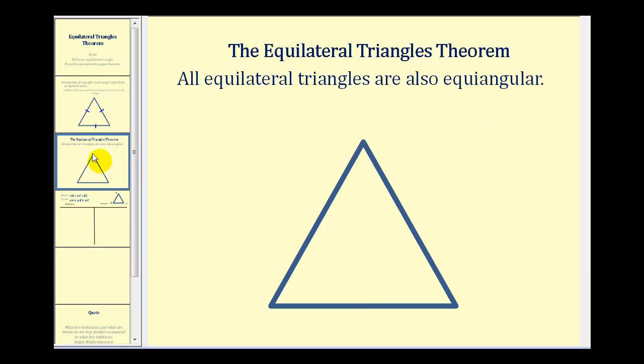Now the equilateral triangles theorem tells us that all equilateral triangles are also equiangular. So if we have an equilateral triangle where we have three congruent sides, then this theorem tells us that the angles are also congruent.